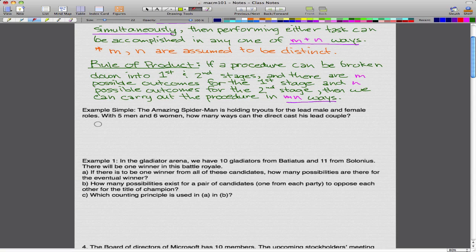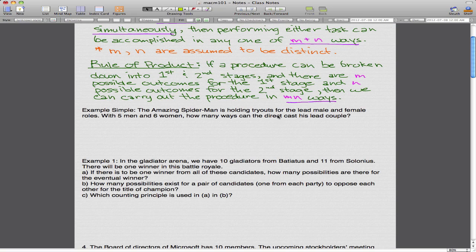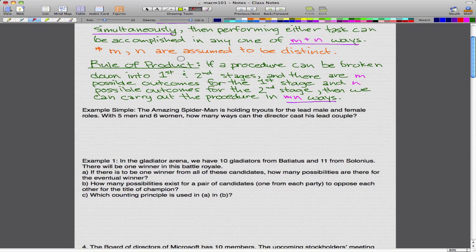Here's a simple example I modified from the book I'm using, which is Grimaldi's Discrete and Combinatorial Mathematics. The Amazing Spider-Man is holding tryouts for the lead male and female roles. There are 5 men and 6 women. How many ways can the director cast his lead couple?